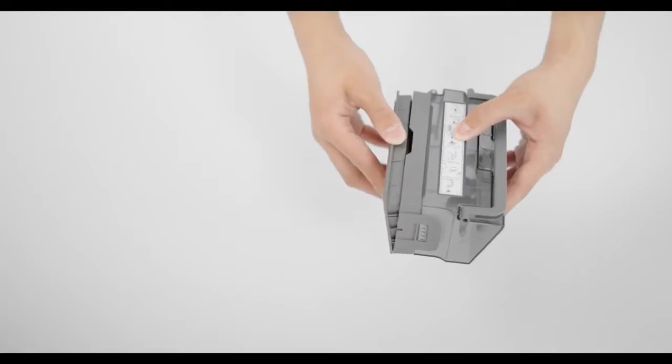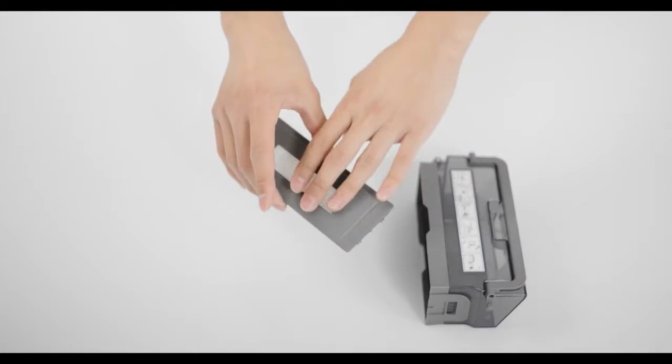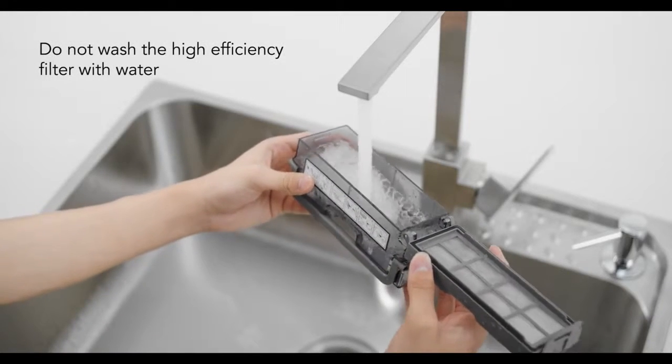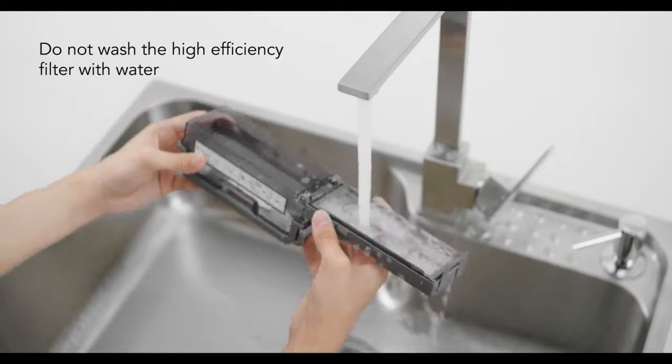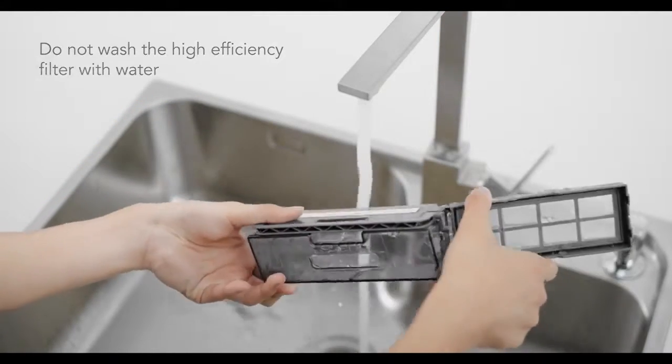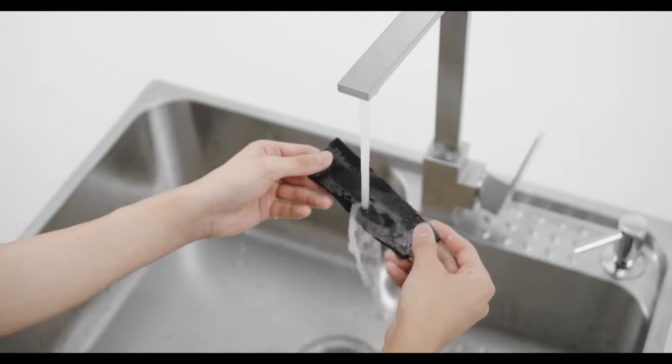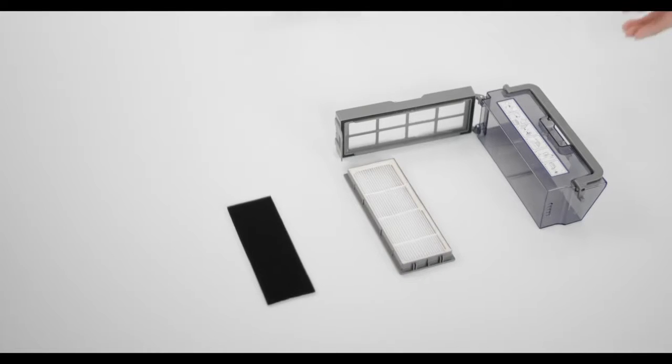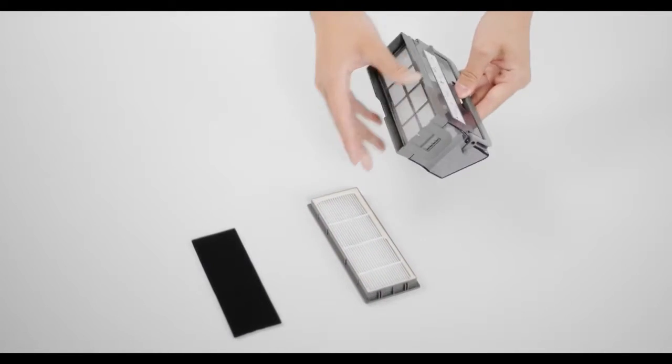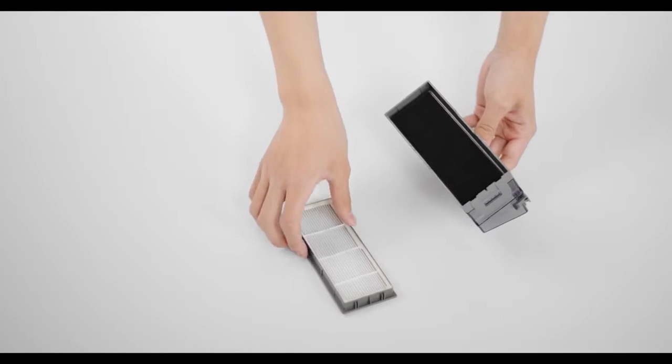Remove the high-efficiency filter and gently clean it once per week. Rinse the dustbin and sponge filter under running water. Dry the dustbin and sponge filter before reinstalling.